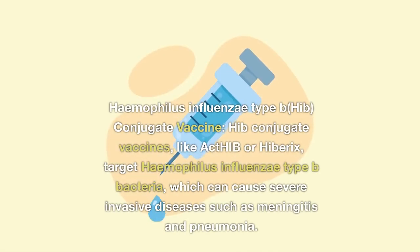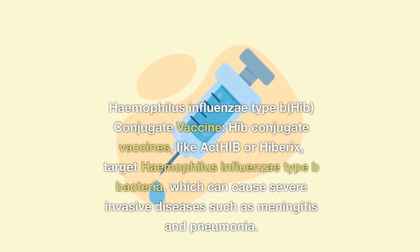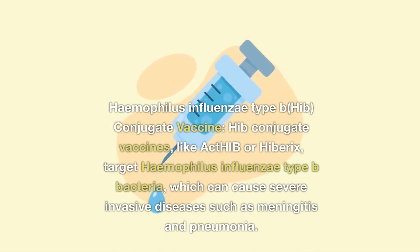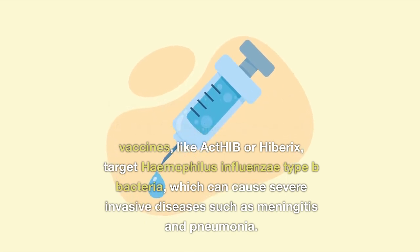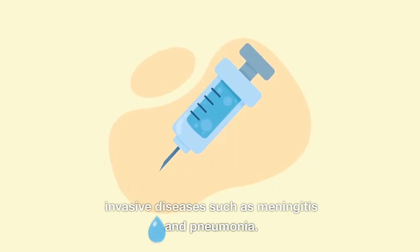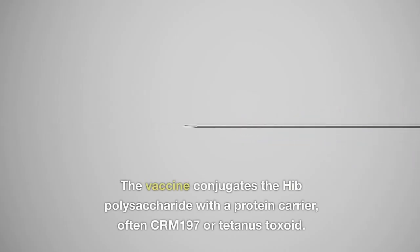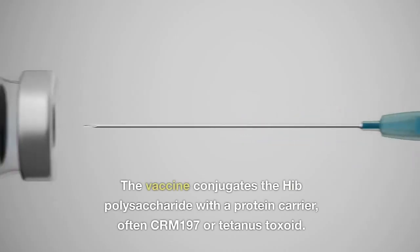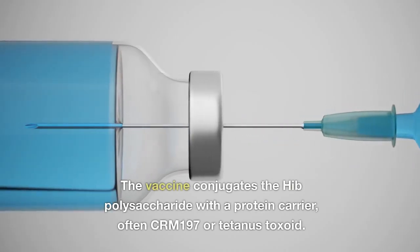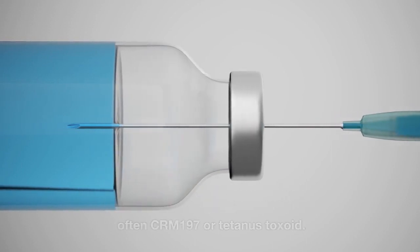Haemophilus influenzae type B (Hib) conjugate vaccine. Hib conjugate vaccines, like Act-Hib or Hiberix, target Haemophilus influenzae type B bacteria, which can cause severe invasive diseases such as meningitis and pneumonia. The vaccine conjugates the Hib polysaccharide with a protein carrier, often CRM-197 or tetanus toxoid.